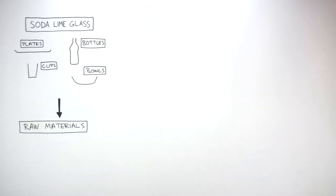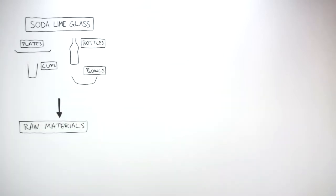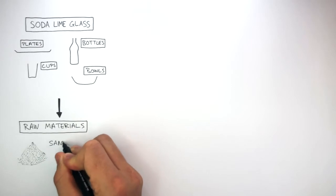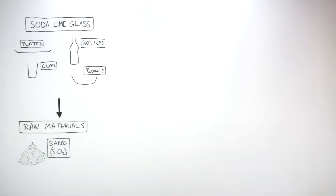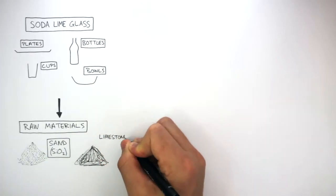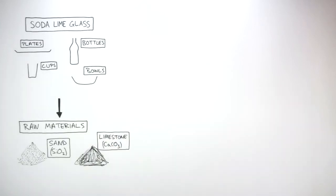The raw materials needed to make soda lime glass include sand, which is SiO2, that's sand, limestone, CaCO3, that's limestone, and sodium carbonate, Na2CO3, that's sodium carbonate.